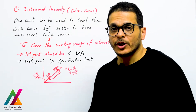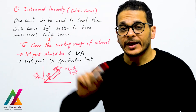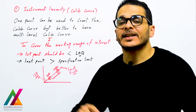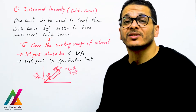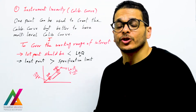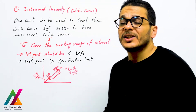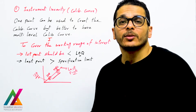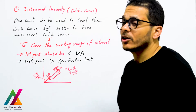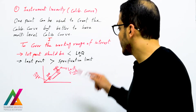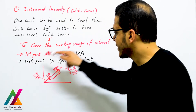One point can be enough to create the calibration curve, but it is better to have a multi-level calibration curve. You run different calibration standards to get different points covering the working range of interest — the range of concentrations expected to be measured by the method. The first point should be lower than the minimum reporting limit or limit of quantitation, and the last point should be higher than the specification limit or maximum residue limit.